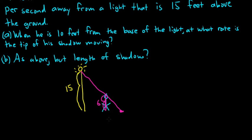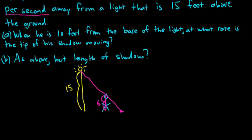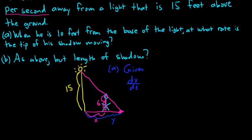We're told he's moving away from the light at a rate of 2 feet per second. A rate is a derivative, so they're giving us a derivative. We need to measure his distance, so let's call that distance x. We want to know at what rate the tip of his shadow is moving, so let's call that bigger distance y. So the blue distance is y, the purple distance is x. We're given dx/dt = 2.